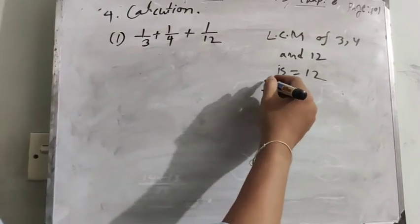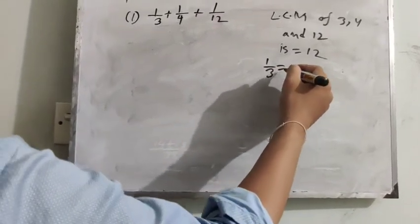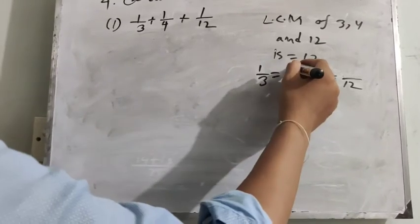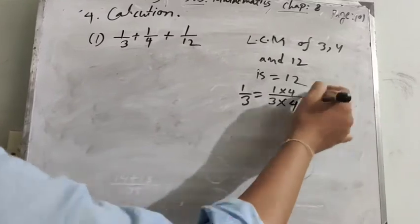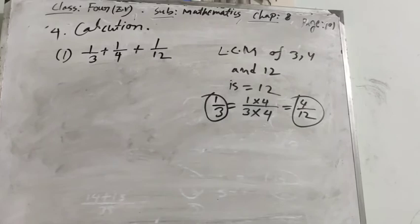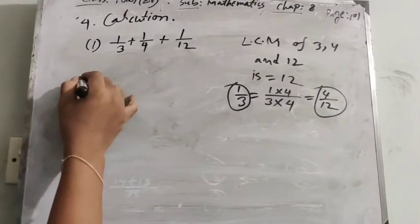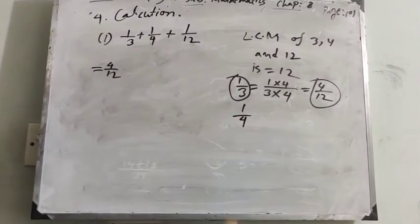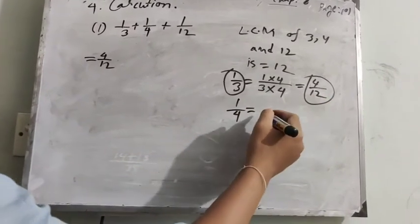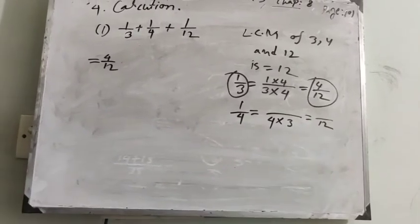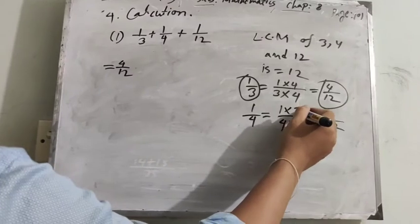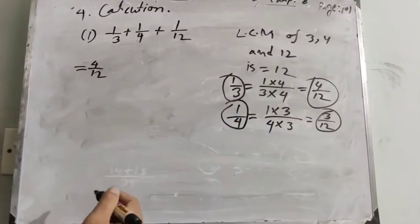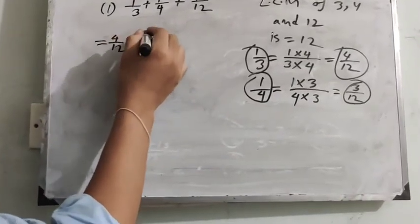The first fraction is 1/3. We have to change the denominator 3 to 12. So 3 multiplied by 4 equals 12, and 1 multiplied by 4 equals 4. So 4/12 is the equivalent fraction of 1/3, and we can write 4/12. The second fraction is 1/4. We have to change 4 to 12. So 4 multiplied by 3 equals 12, and 1 multiplied by 3 equals 3. So 3/12 is the equivalent fraction of 1/4, and we can write 3/12.